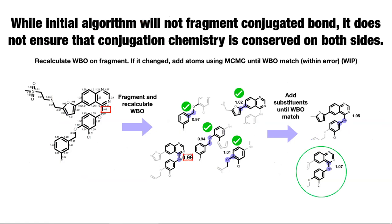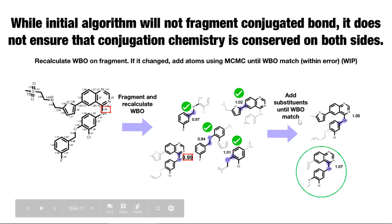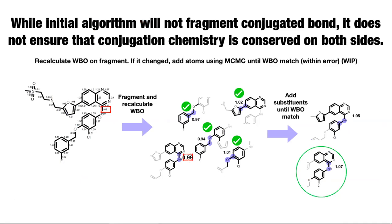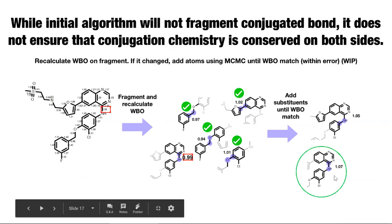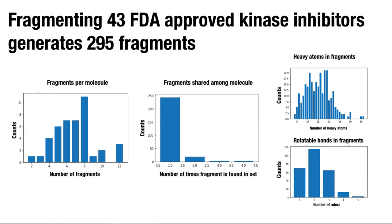I start with the initial sunitinib molecule with calculated Wiberg bond orders, do the initial fragmentation scheme, then recalculate Wiberg bond orders on the fragment and look at how much they change. In this case it changes quite a bit — 1.09 versus 0.99 — which I would want to avoid. Then you randomly add different parts of the molecule until you arrive at a bond order close to within the variance expected, and that's how you find fragments with similar torsional profiles to the parent molecule.